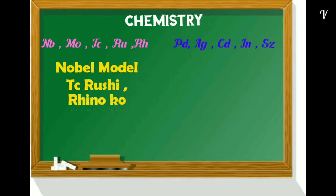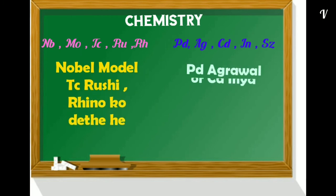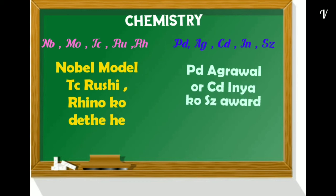Nb, Mo, Tc, Ru, Rh, Pd, Ag, Cd, In, Sn. Nobel model TC Rushi Rhino ko deete hai. PD Agarwal aur CD Inya ko SZ award mili hai. N, B we took Nobel so that, for this only we have taken N, B. And others all are right only. And here they are names - PD Agarwal and CD Inya. SZ won award. Actually it is the symbol.